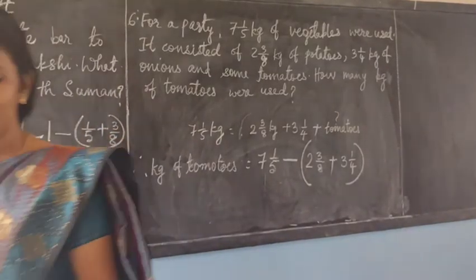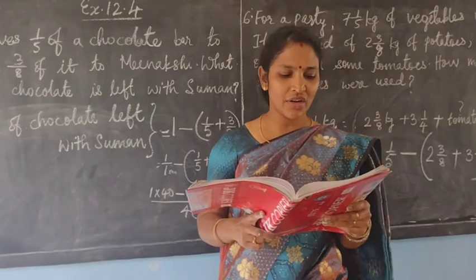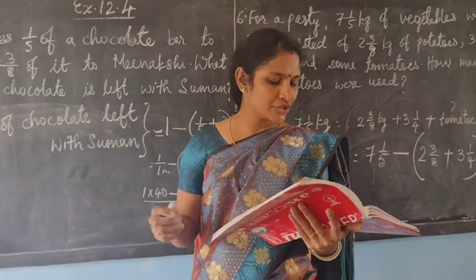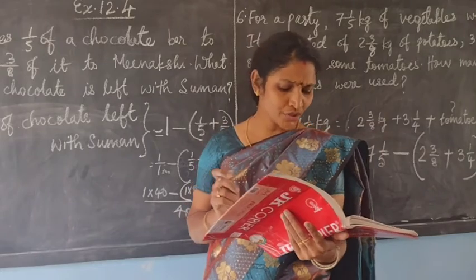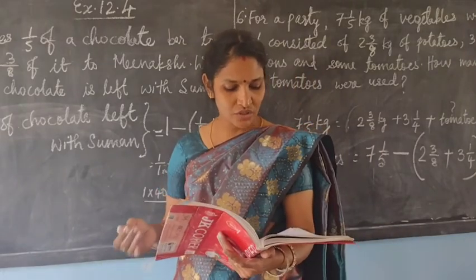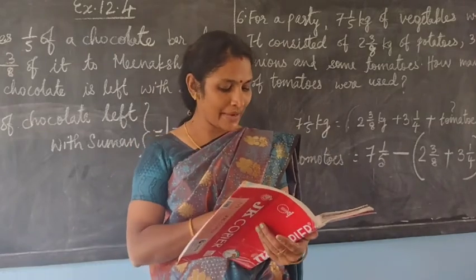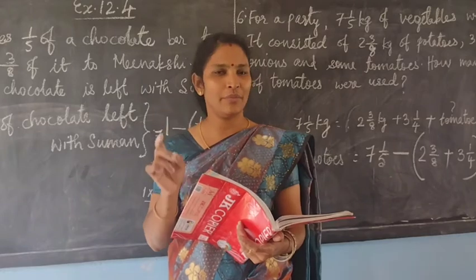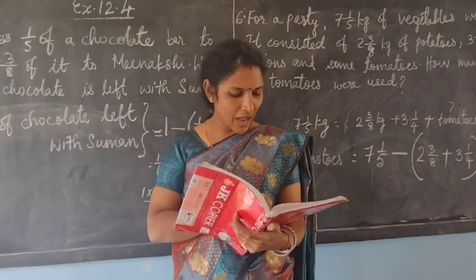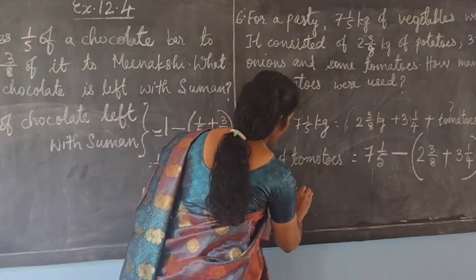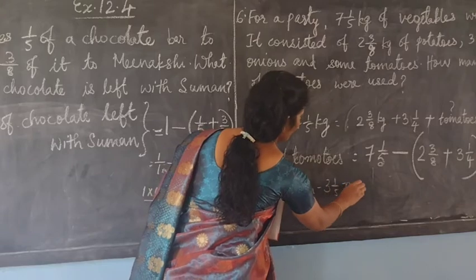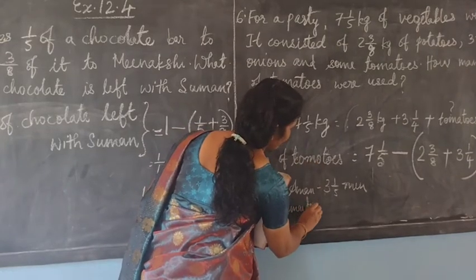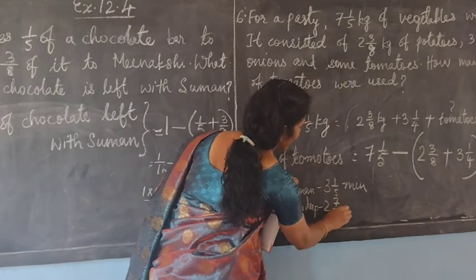Now the last question — a very easy one. In a 1000-metre race, Amand took 3 and 1/5 minutes while Amanddeep took only 2 and 7/10 minutes. Who took more time and how much more? The time Amand took to reach — it is a 1000-metre race — whoever reaches the finishing point in less time is the winner.